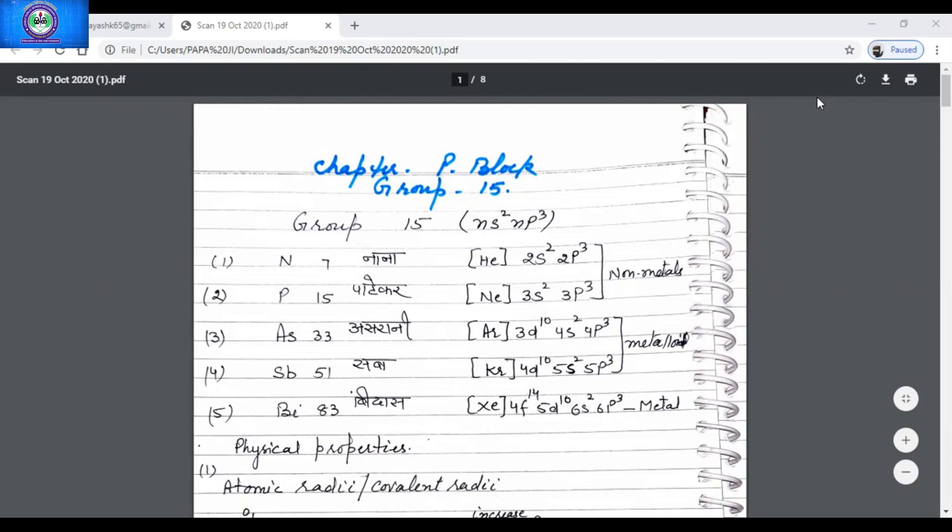Nitrogen is the main constituent of the air and around 79% of the atmosphere consists of nitrogen. Nitrogen exists as N2.